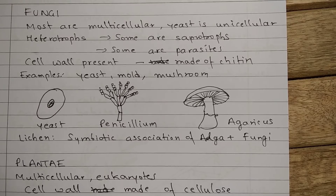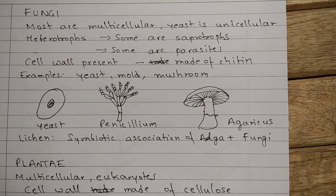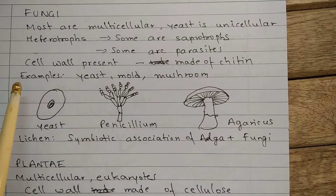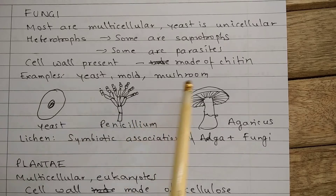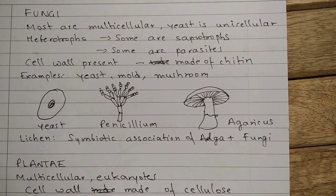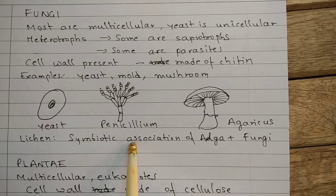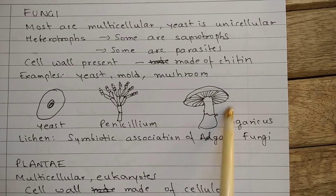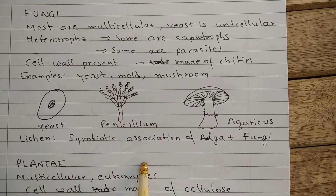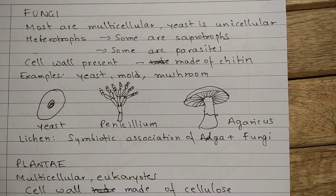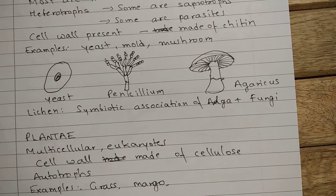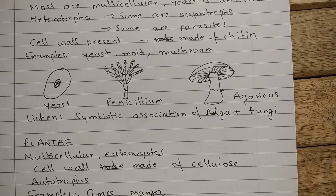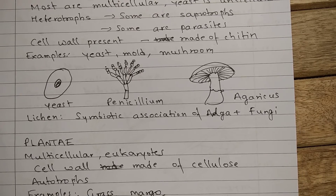Some are parasites. Cell wall is present in fungi and cell wall is made of chitin. Examples are yeast, mold, and mushroom. This figure shows yeast. This is Penicillium, which is a mold. And this is Agaricus — most of you must be familiar with mushroom. Mold is what you must have seen as a yellow cotton-like growth on stale bread or stale fruits and vegetables — that layer which appears like cotton is because of mold.